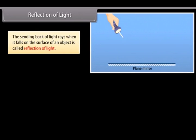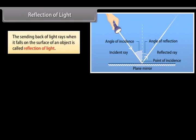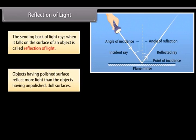Reflection of light. The sending back of light rays when it falls on the surface of an object is called reflection of light. Objects having polished surfaces reflect more light than objects having unpolished dull surfaces.